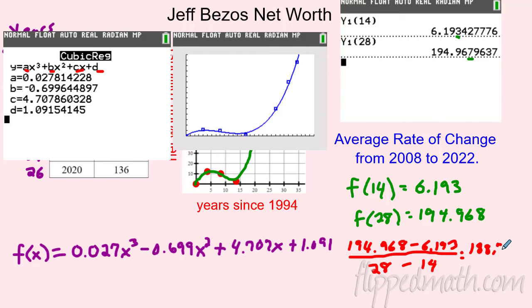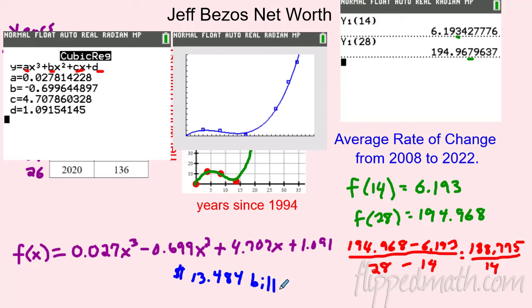Subtracting the y-values gives 188.775 — I used the calculator, we're allowed to on this section. Then 28 minus 14 is 14. Dividing: 188.775 ÷ 14 ≈ 13.484 billion dollars per year. So his average rate of change from 2008 to 2022 is approximately 13.484 billion dollars per year. That is pretty impressive.